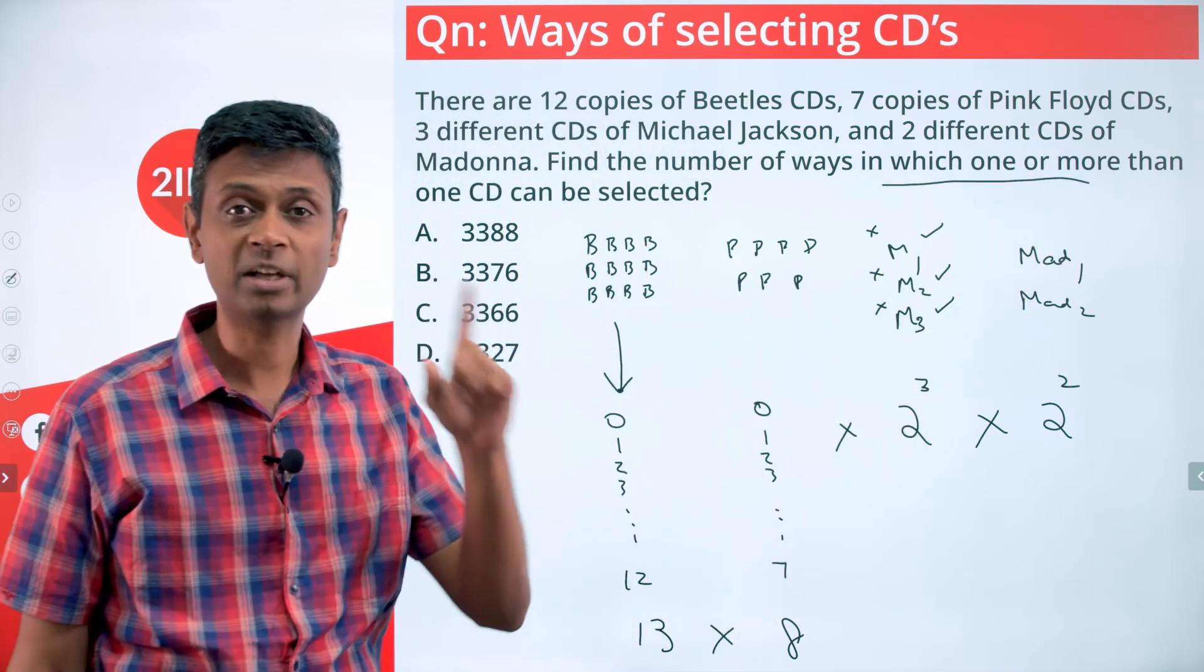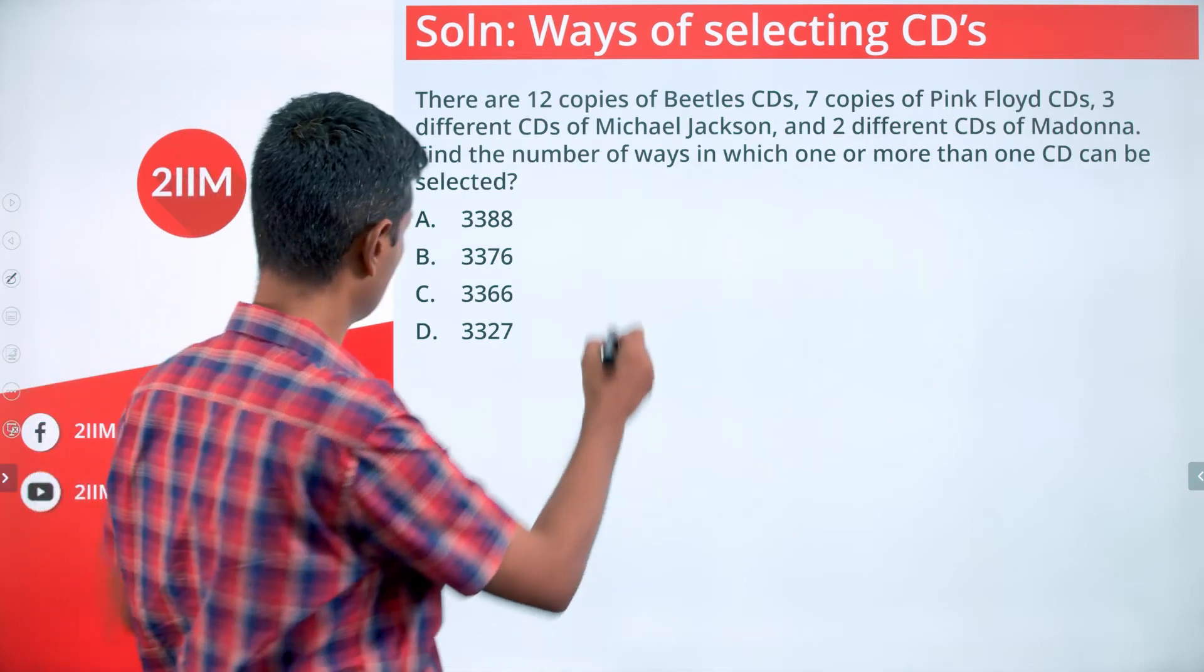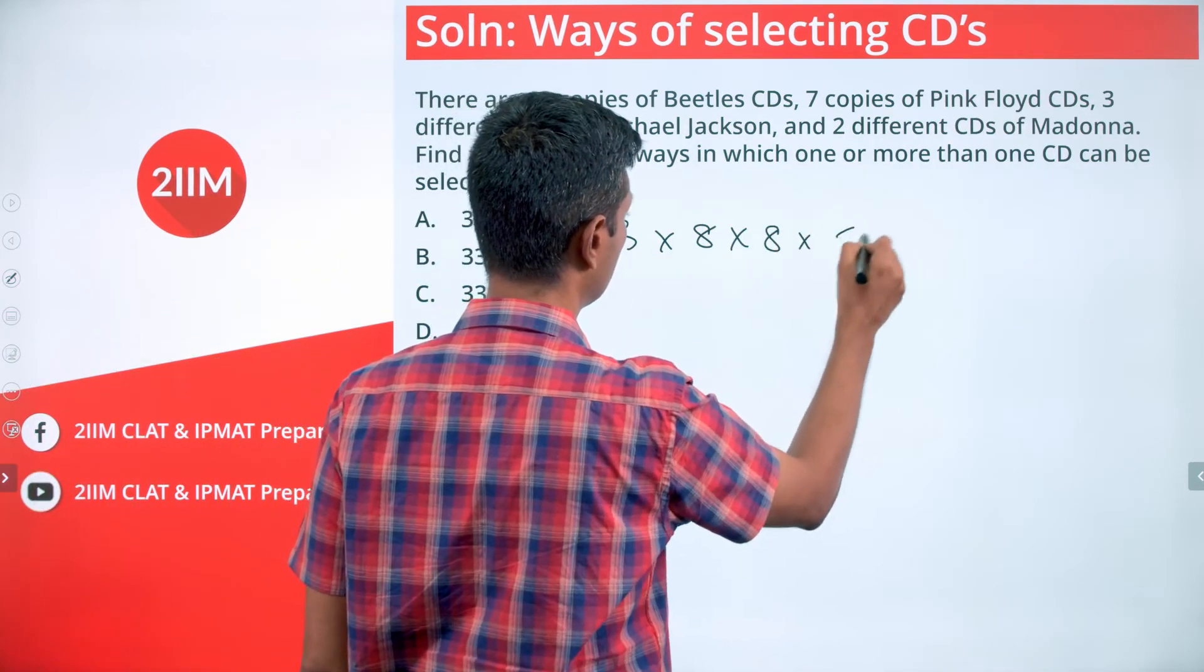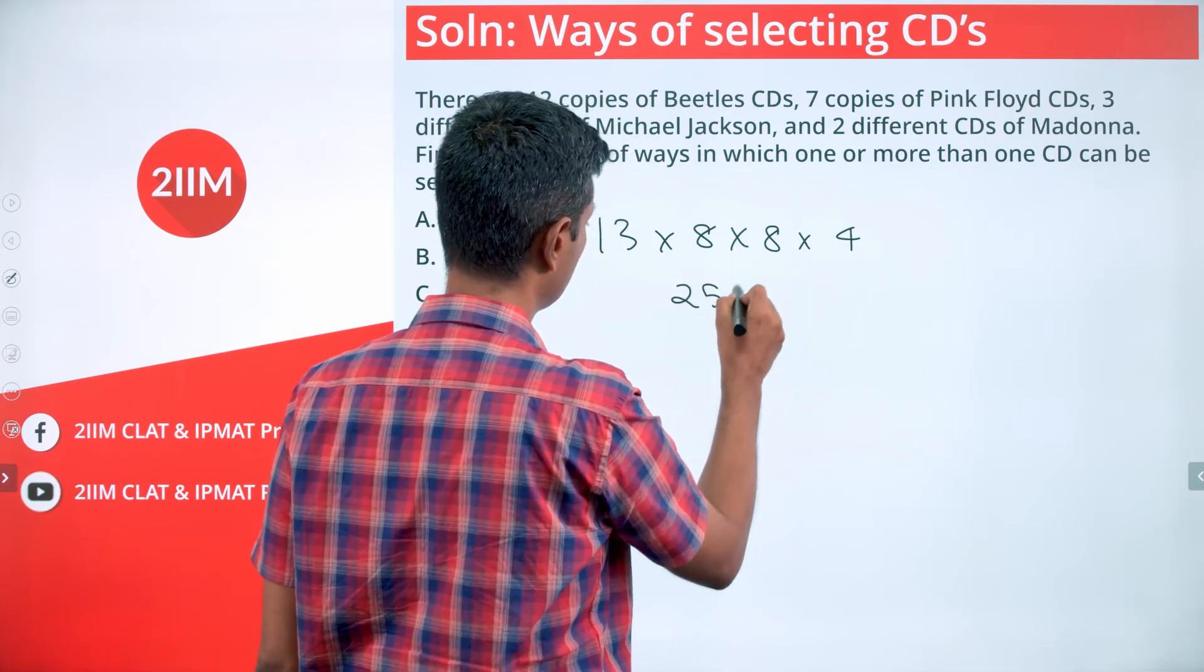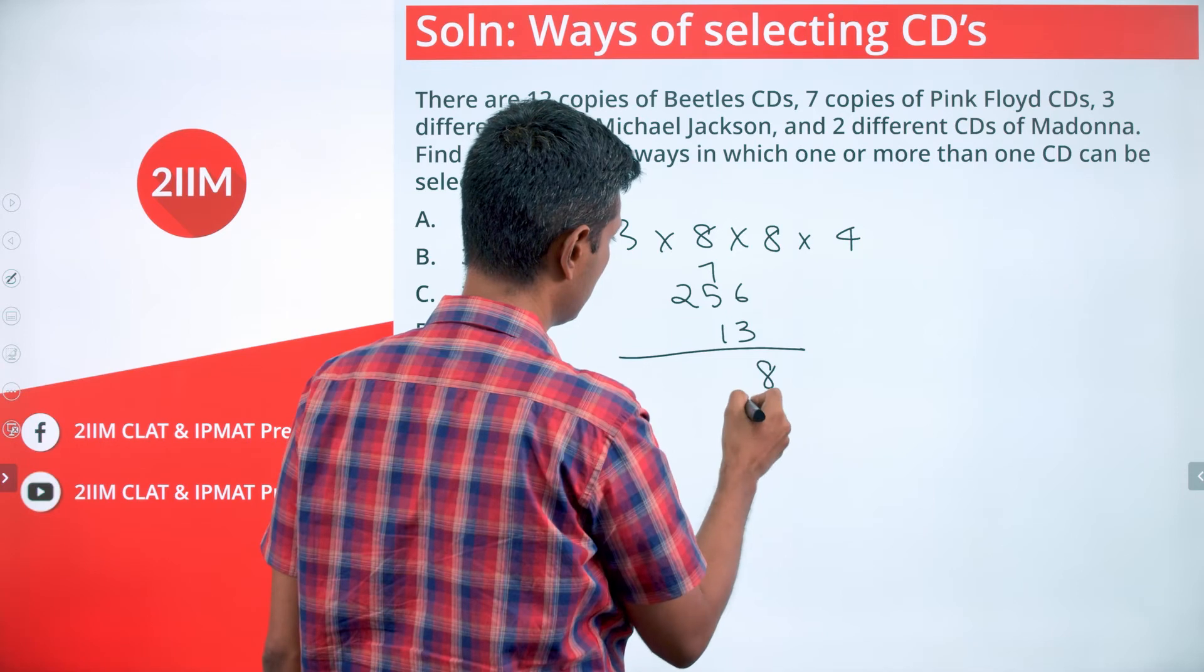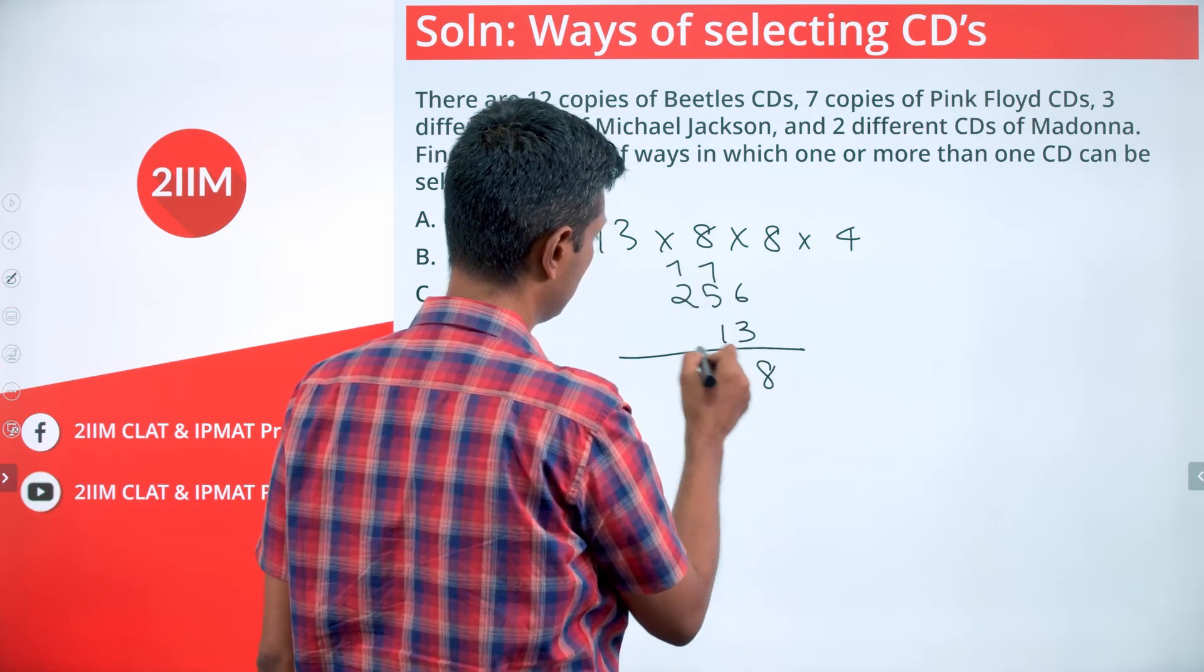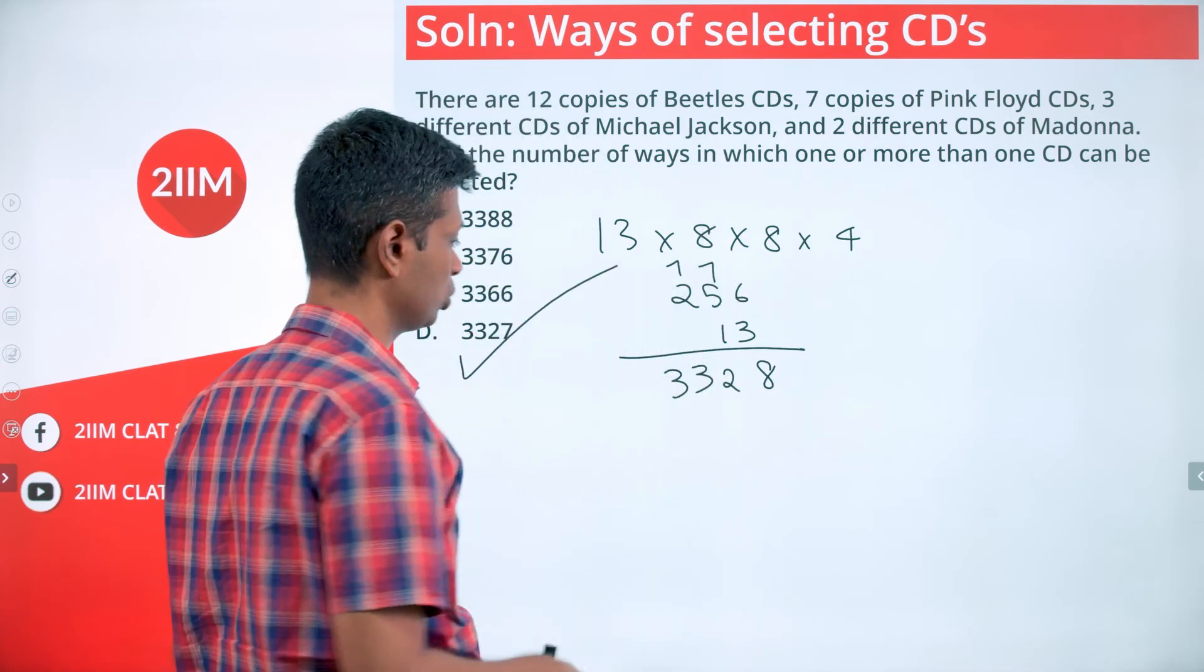So in this whole thing, subtract one. We're looking for 13 × 8 × 8 × 4, which is 64 × 4, so 256 × 13 minus 1. Let me calculate: 13 × 6 is 78, carry 8, 7. 65 plus 7 is 72, carry 2, 7. 26 plus 7 is 33, carry 2. 8 minus 1 gives us 3327.